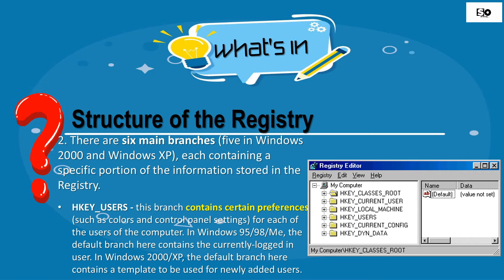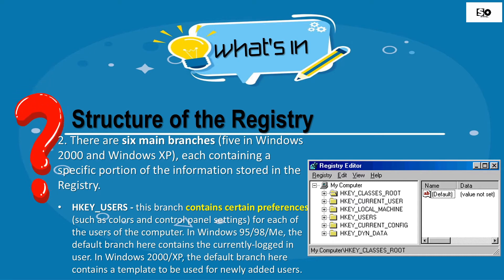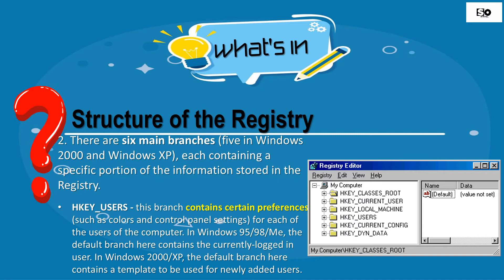Fourth is the HKEY_USERS. This branch contains certain preferences such as colors and Control Panel settings for each of the users of the computer. In Windows 95/98, the default branch contains the currently logged-in user. In Windows 2000 and XP, the default branch here contains a template to be used for newly added users.